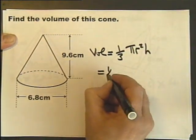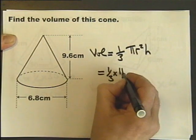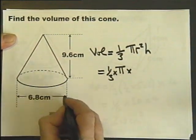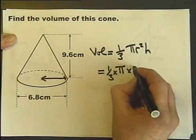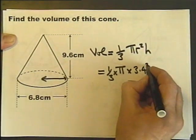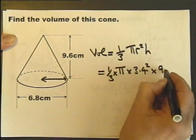So it's a third, times pi, times the radius squared. And that's the diameter, so we'll have to do a bit of halving of that. So that's the radius squared, times the perpendicular height.